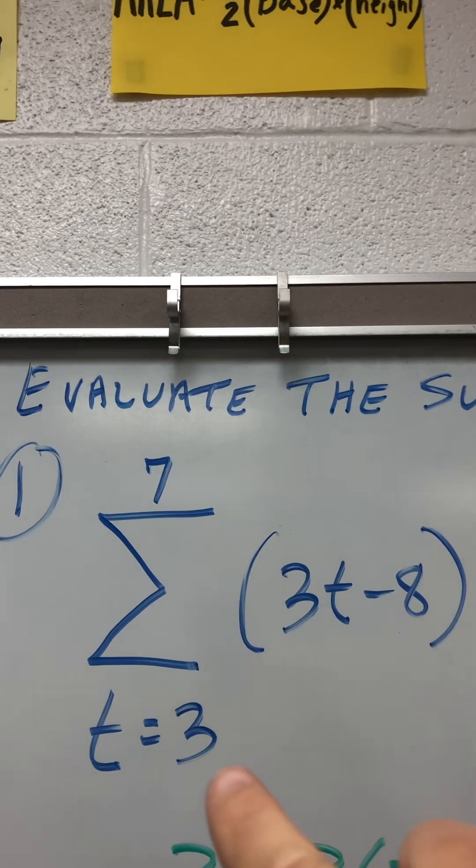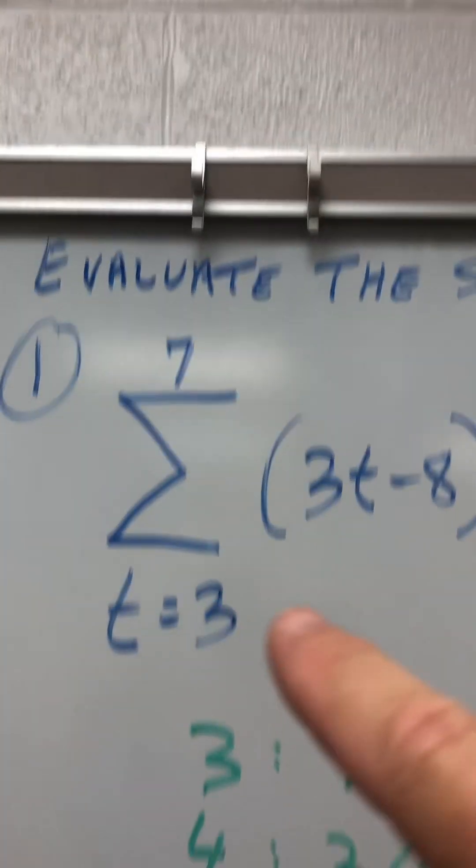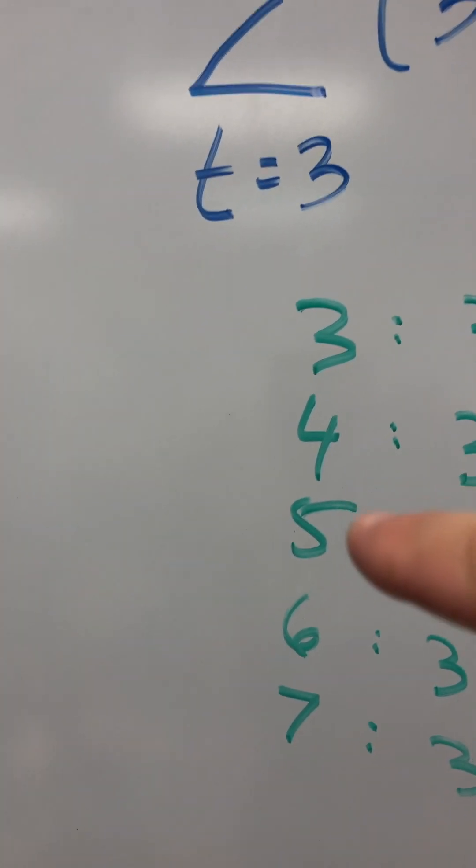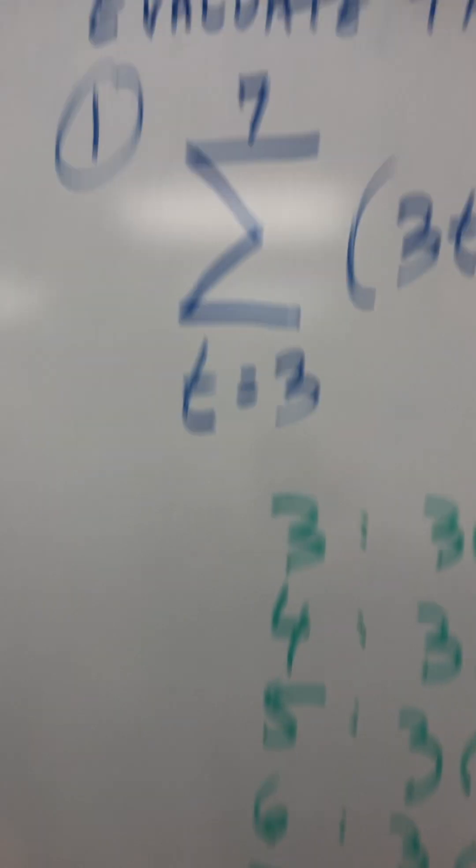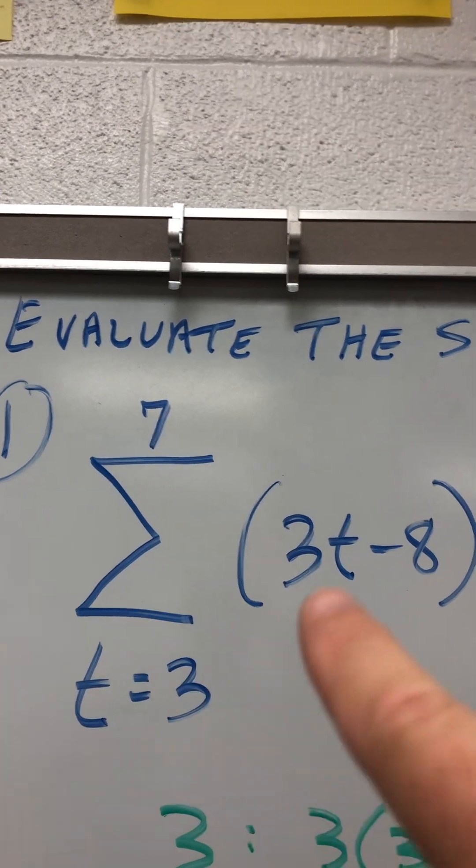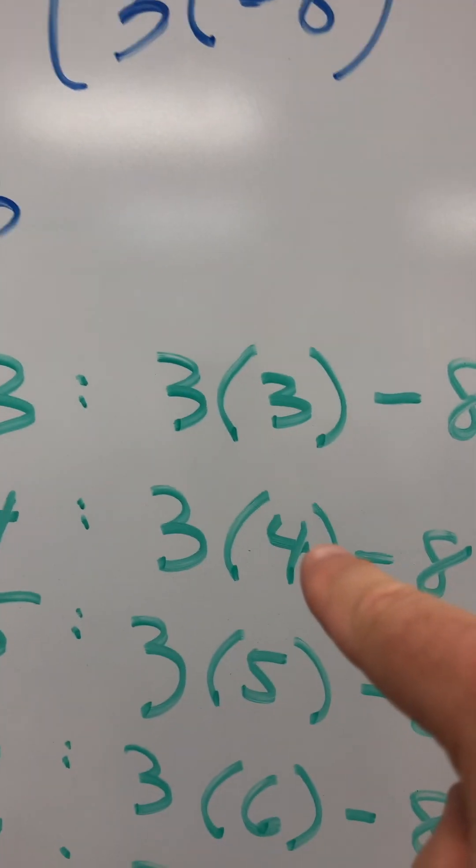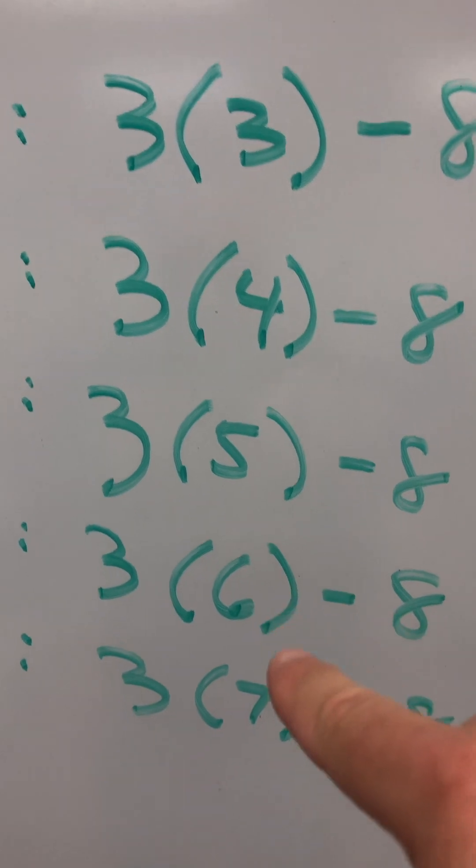So you see this three and this seven, that just means we're going to go from three to seven. We're going to go three, four, five, six, and seven. So if T equals three to seven, meaning instead of this T, I'm going to put in three, then four, then five, then six, then seven.